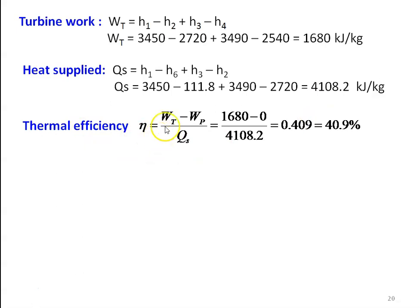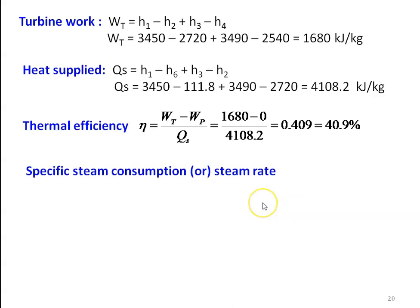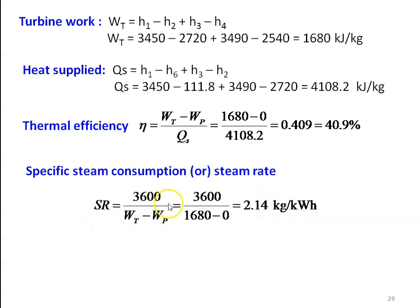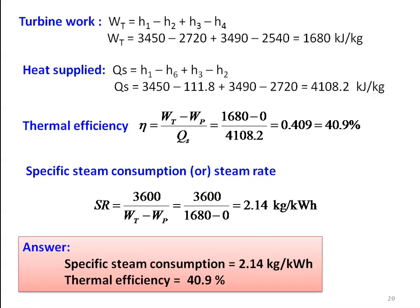Thermal efficiency η = (Wt − Wp) / Qs. The pump work is neglected as stated in the problem, so Wp = 0. Thus η = 1680 / 4108.2 = 0.409, which is 40.9%. The specific steam consumption SR = 3600 / (Wt − Wp) = 3600 / 1680 = 2.14 kg/kWh. The answer: specific steam consumption is 2.14 kg/kWh and thermal efficiency is 40.9%.